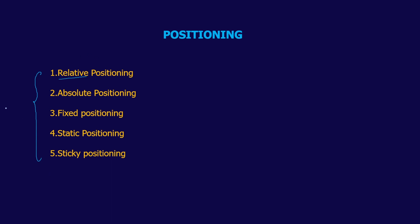Relative Positioning checks whether any element is present before it and after it, and relative to that particular element, it is going to place itself. For Absolute Positioning, wherever you give the place — for example, 20 pixels from the left and 30 pixels from the top — it just positions itself at the exact position. Fixed positioning means it is not going to move at all even if you scroll your page. Static Positioning is going to be static. Sticky is going to get back to that particular position and stick wherever it is.